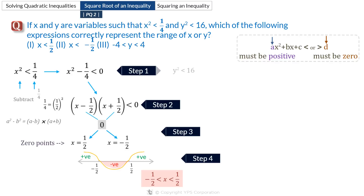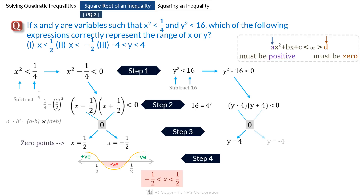Now solving y squared less than 16: in step 1, subtract 16 from both sides to get y squared minus 16 less than 0. In step 2, factorize using the difference of squares — since 16 equals 4 squared, we get (y minus 4)(y plus 4) less than 0. In step 3, plot the zero points 4 and minus 4 on the number line. Drawing the wavy line, the inequality holds for minus 4 less than y less than 4.